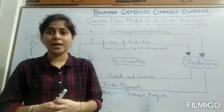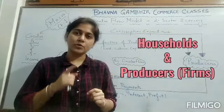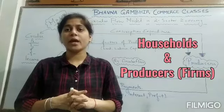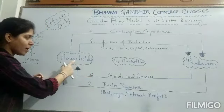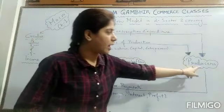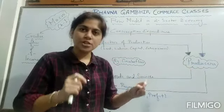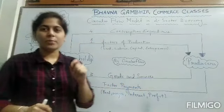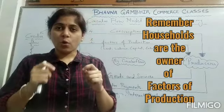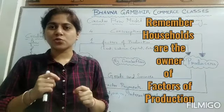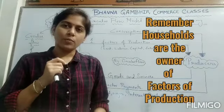When we talk about two sectors, the first two sectors are households and producers — also called firms. In the last video I told you about factors of production and who owns them. Households are said to be the owners of factors of production. This is a very important point.